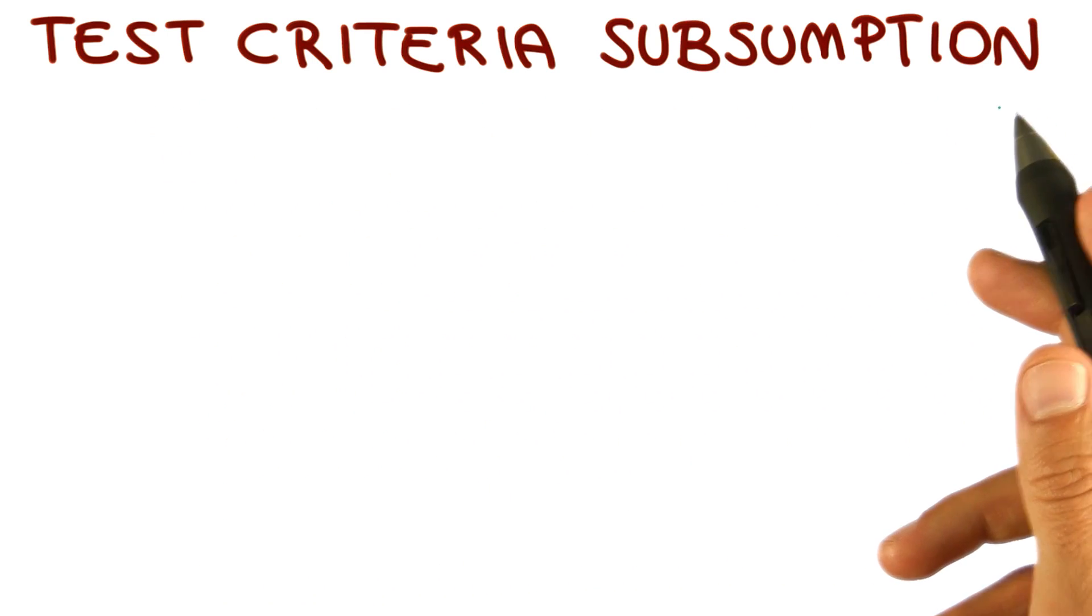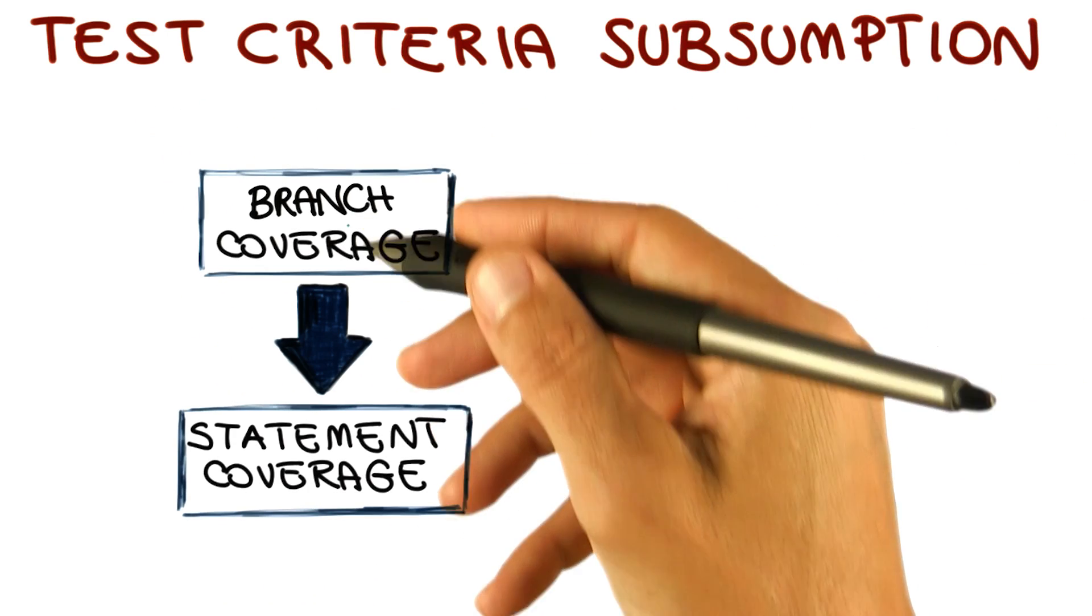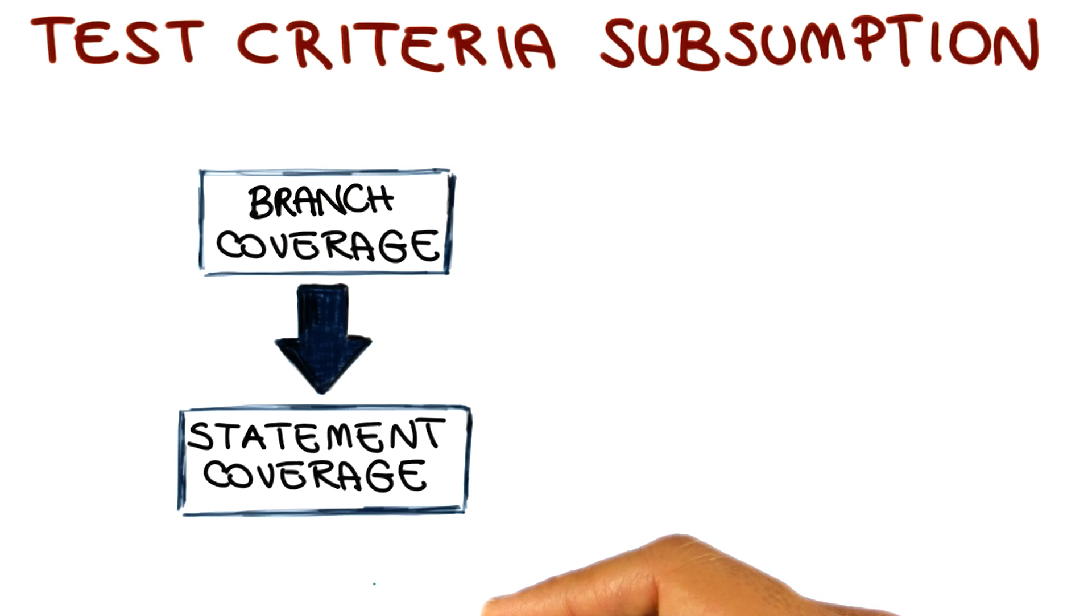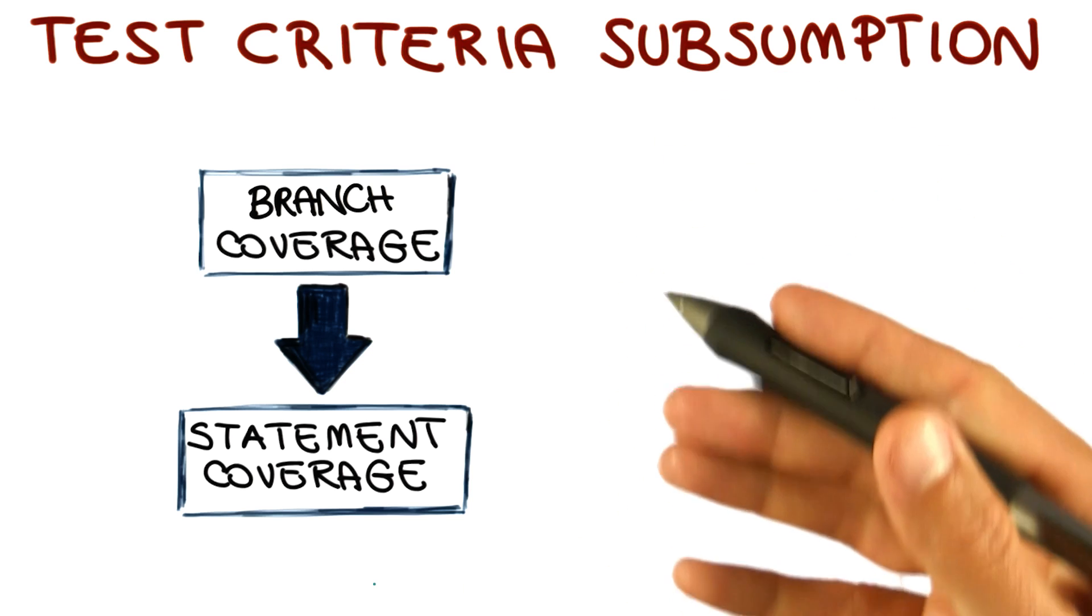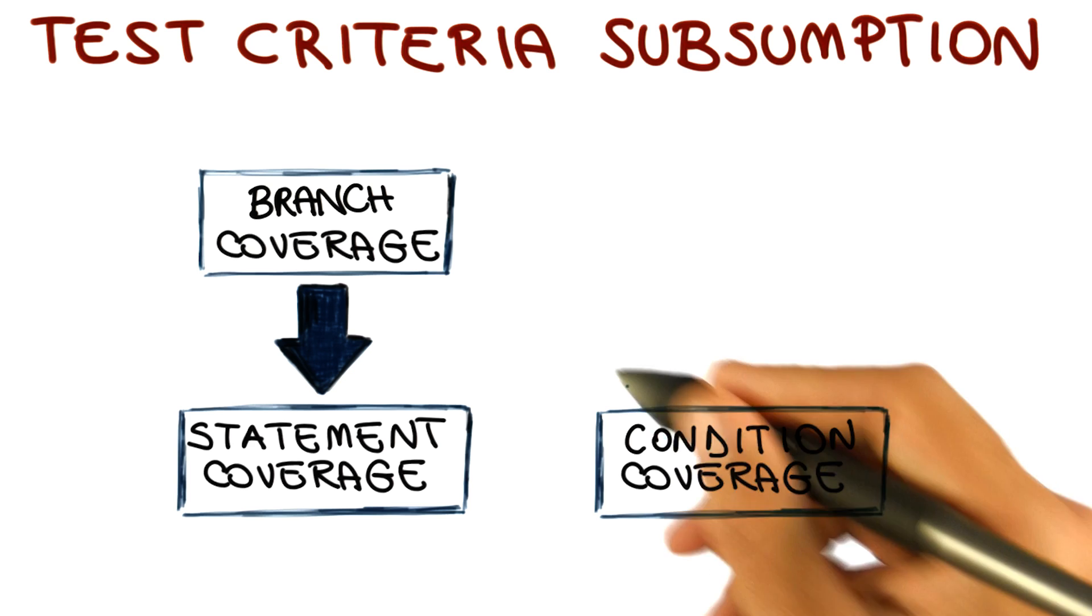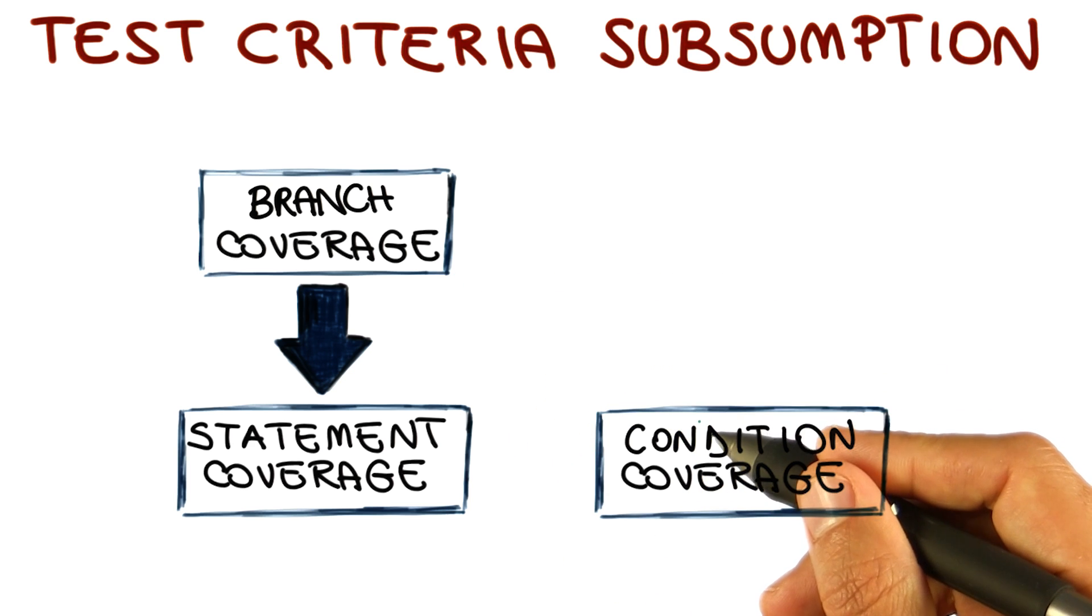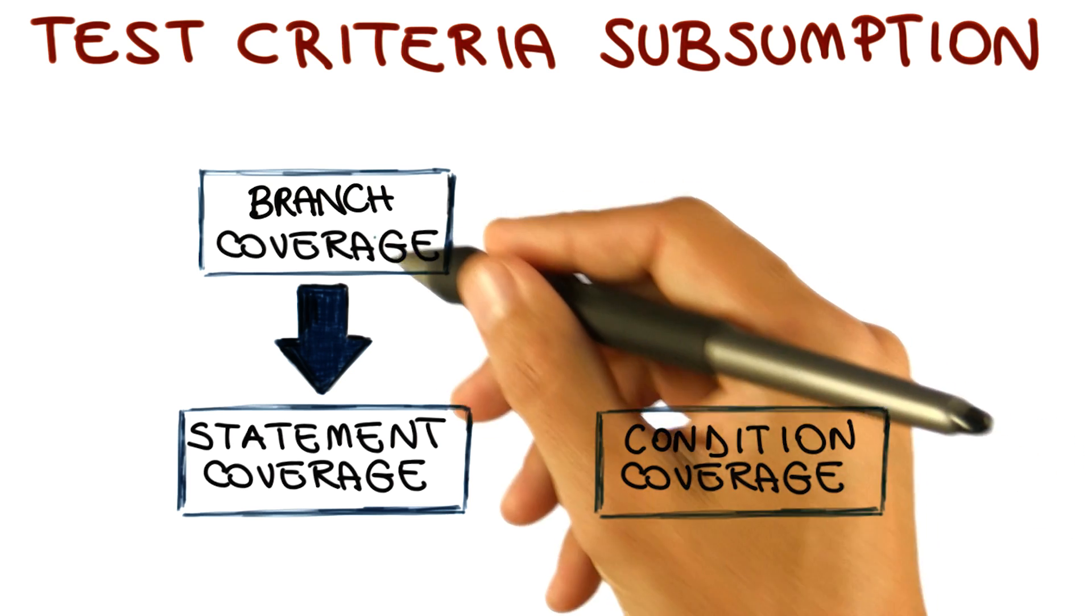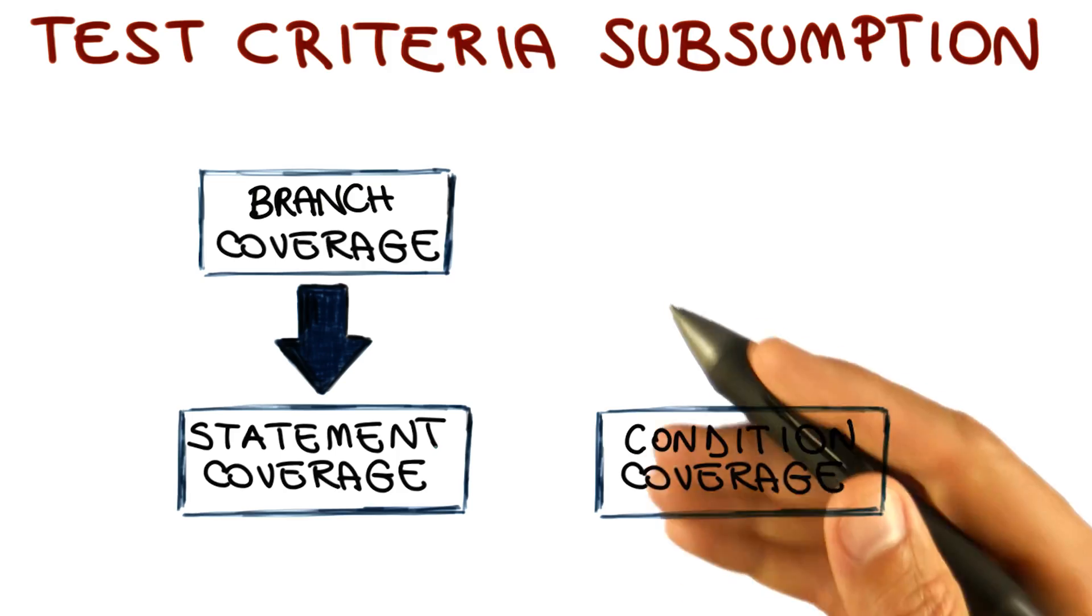Let's go back to our test criteria subsumption representation, where we already had branch coverage and statement coverage. If we want to add condition coverage to this page, we have to put it here on the side with no relationship of subsumption with either branch coverage or statement coverage, which means that the criteria are not comparable.